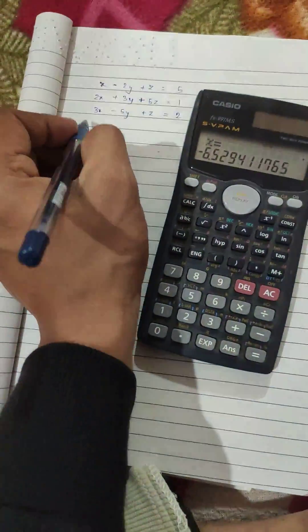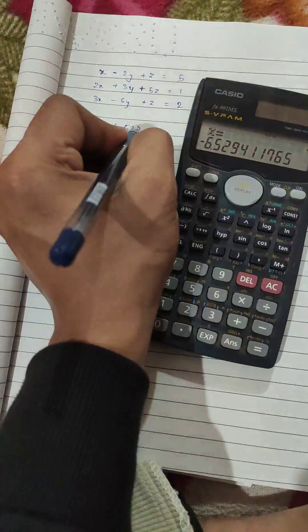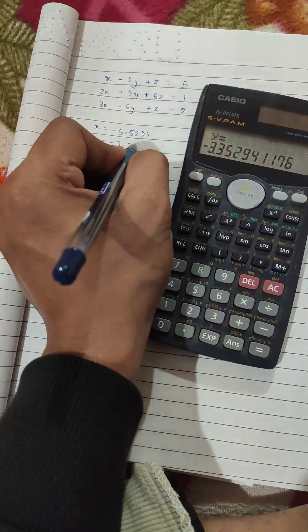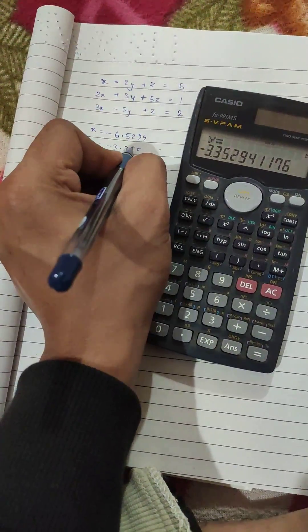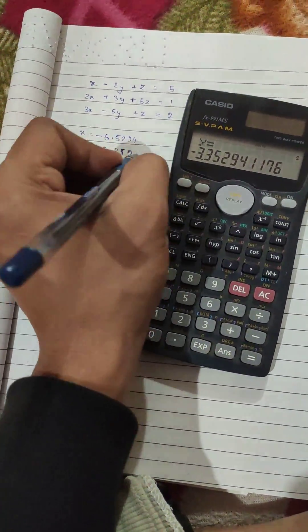So we have the x is equal to minus 6.5294, y is minus 3.352, depends on you how many digits you want to take after the decimal.